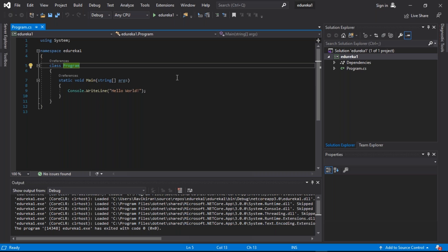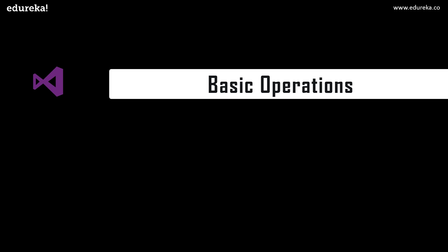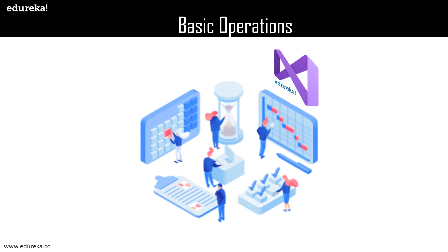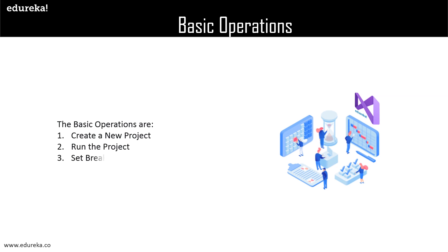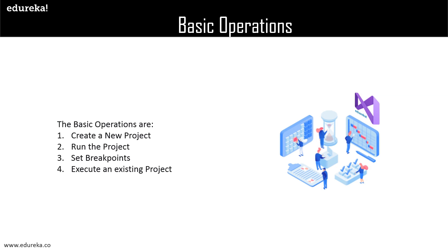Now let us move ahead and understand the next chapter in our Visual Studio tutorial — basic operations. Some of the basic operations in Visual Studio are creating a project, running the project, setting breakpoints, and executing an existing project. We have seen how to create a new project and execute it. Now let us understand how to set breakpoints in our project and how to execute an already existing project from our local system.